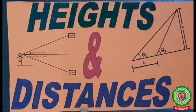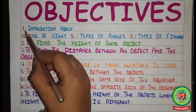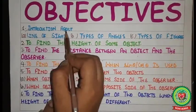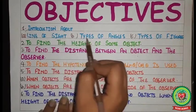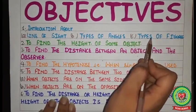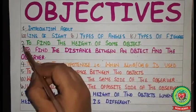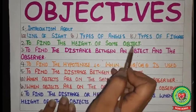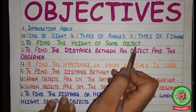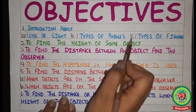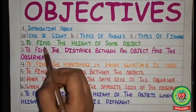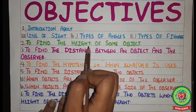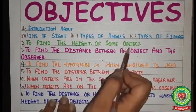Before starting with the questions related to the topic, we will go over the objectives of today's class. Objective number one is introduction about line of sight, types of angles, and types of figures. Objective number two is to find the height of some object. Today we will cover all the definitions and related terms, and do one question in which we have to find the height of an object.